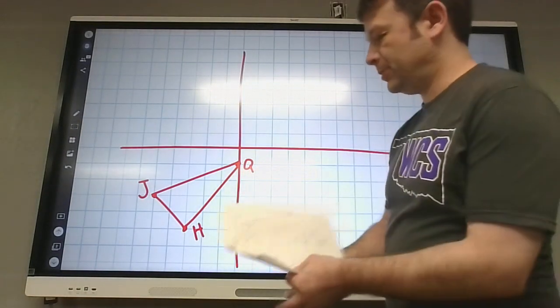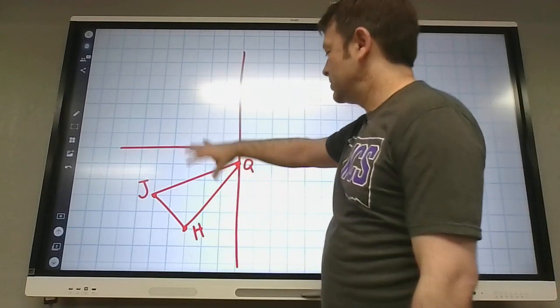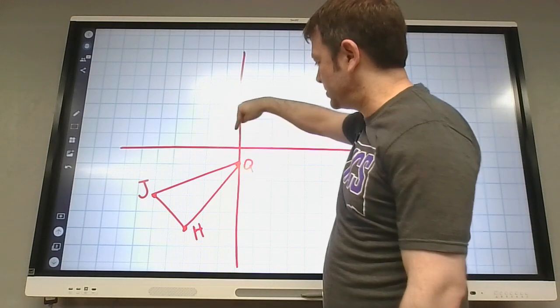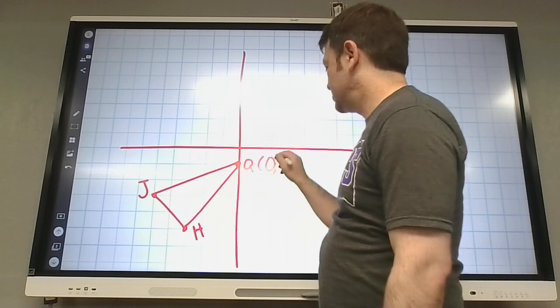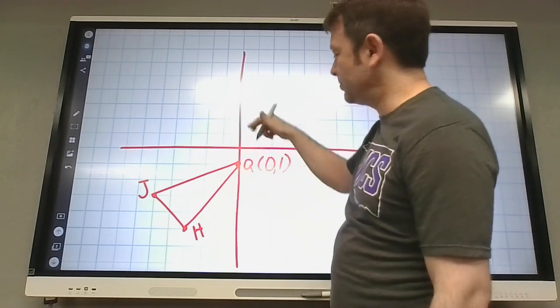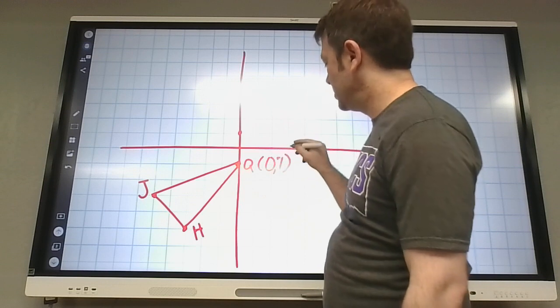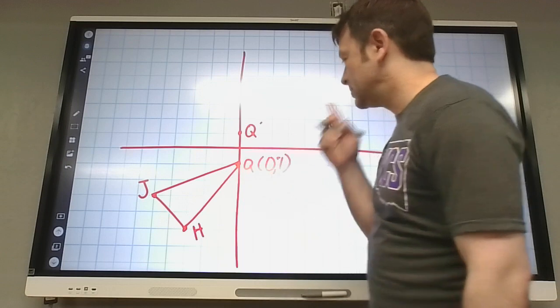So if you rotate 180, that's like the other side, right? So if Q rotates around the origin, Q right now is at 0, 1. And if it rotates around the origin, it'll just be at 0, negative 1.